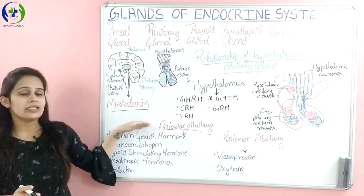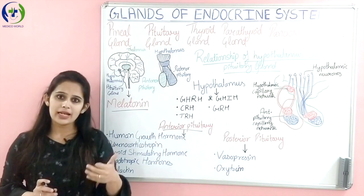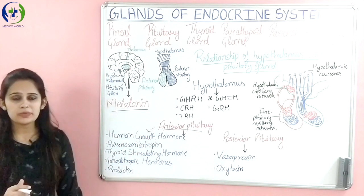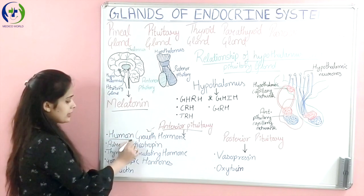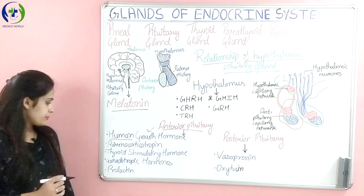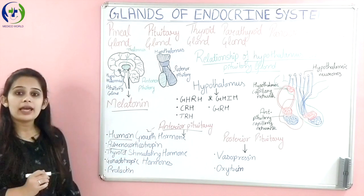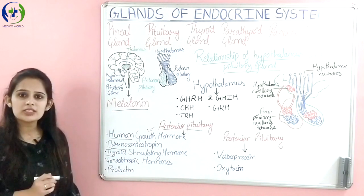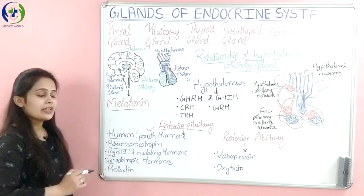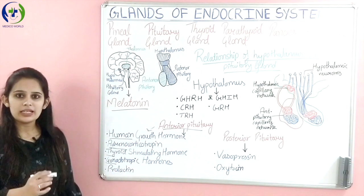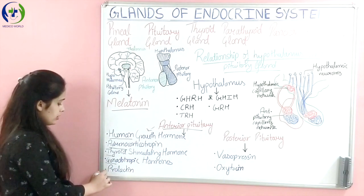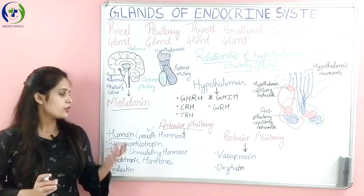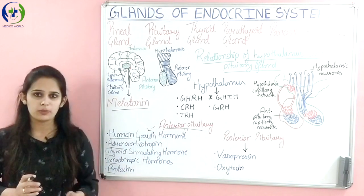The anterior pituitary gland is also called the master gland. This anterior pituitary gland is made up of different types of cells: somatotropes which secrete human growth hormone, corticotrophs which secrete adrenocorticotropin, thyrotrophs which secrete thyroid stimulating hormone, gonadotrophs which secrete gonadotropic hormones like LH and FSH, and lactotrophs which secrete prolactin. So these were the different types of cells of the anterior pituitary gland which synthesize different hormones.